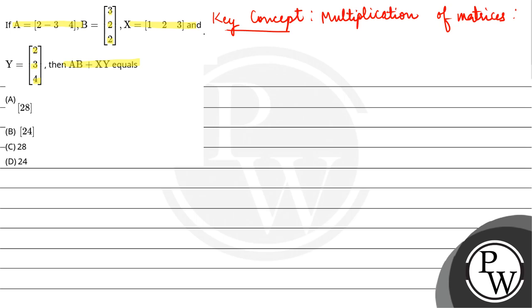First, AB is [2, -3, 4] times [3, 2, 2], which comes out to be 2 into 3 = 6, minus 6, plus 8. So this is equal to 8. This is equation number 1.